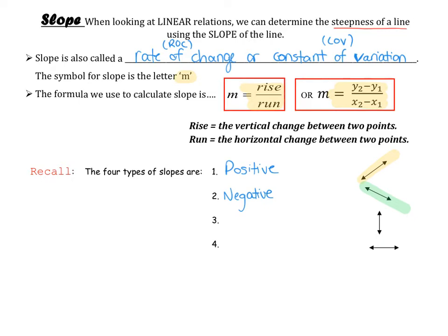And then we have these two special ones. We have our vertical lines. These had special slopes that were what we called undefined. And then the next one was our horizontal lines.